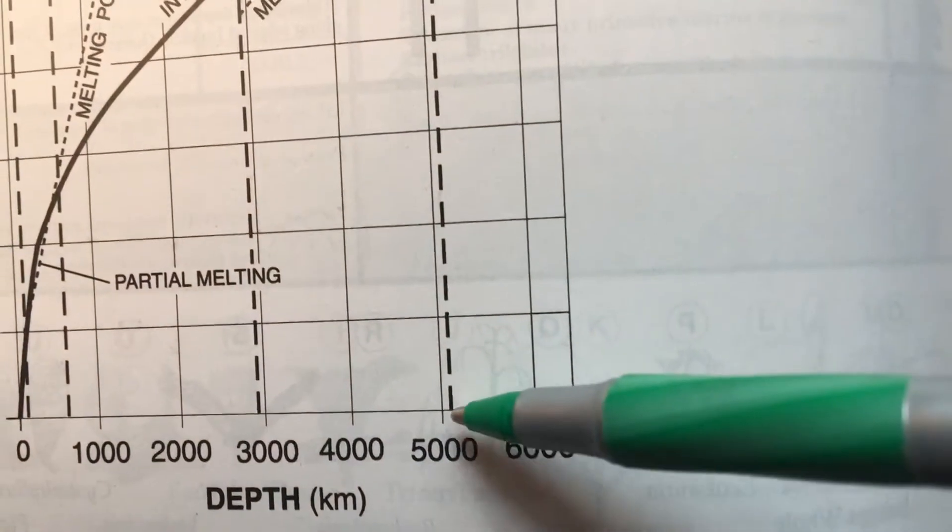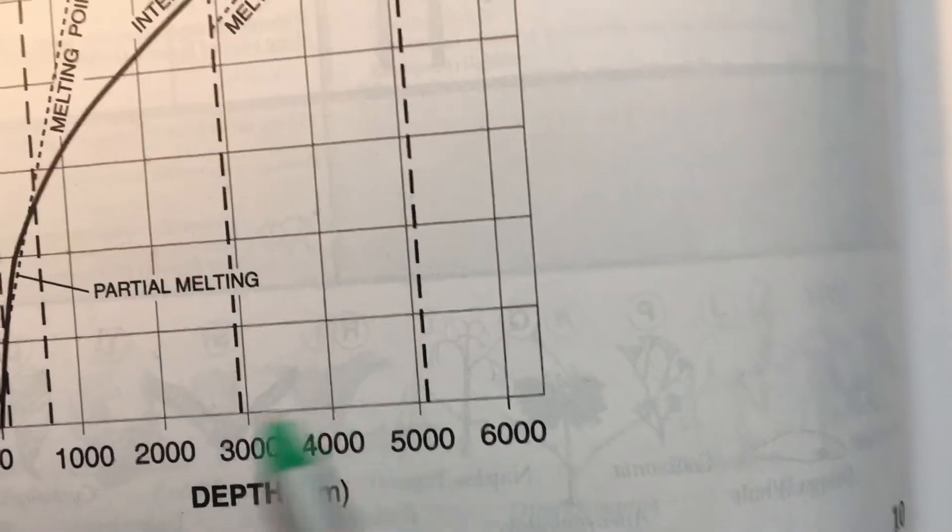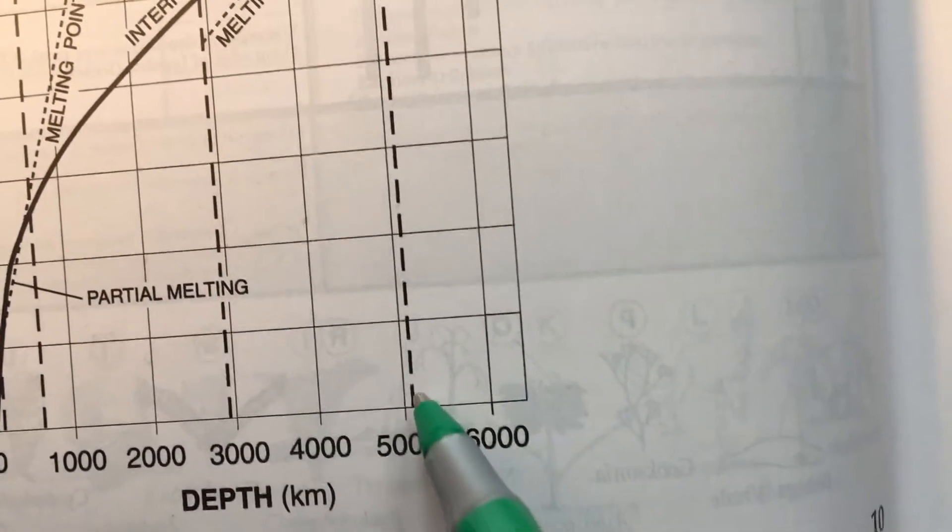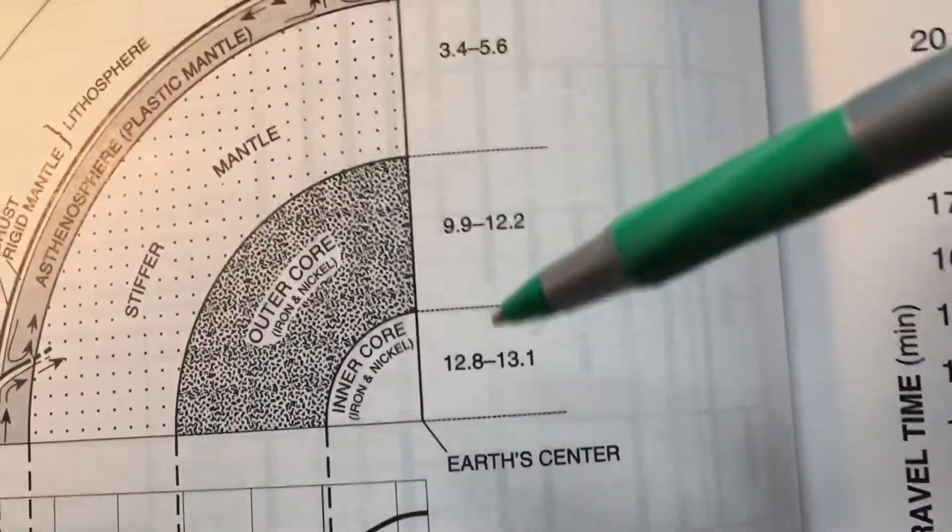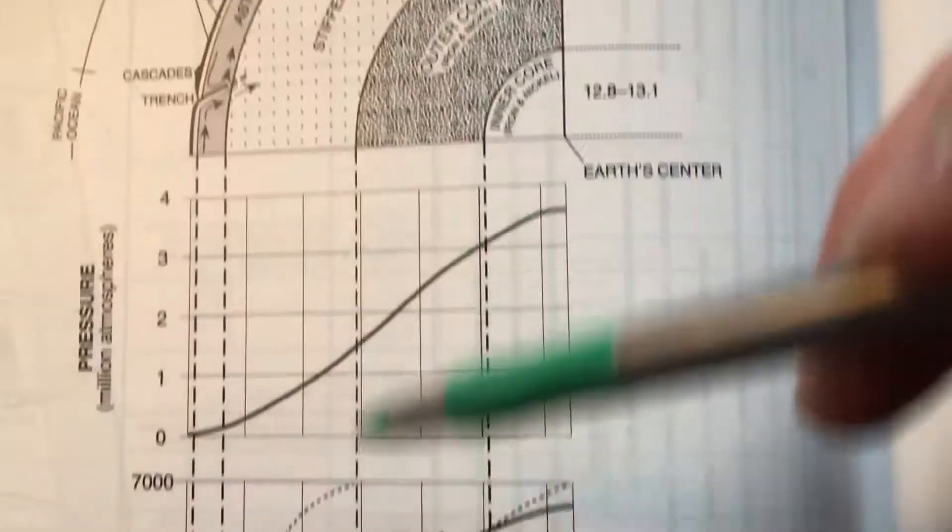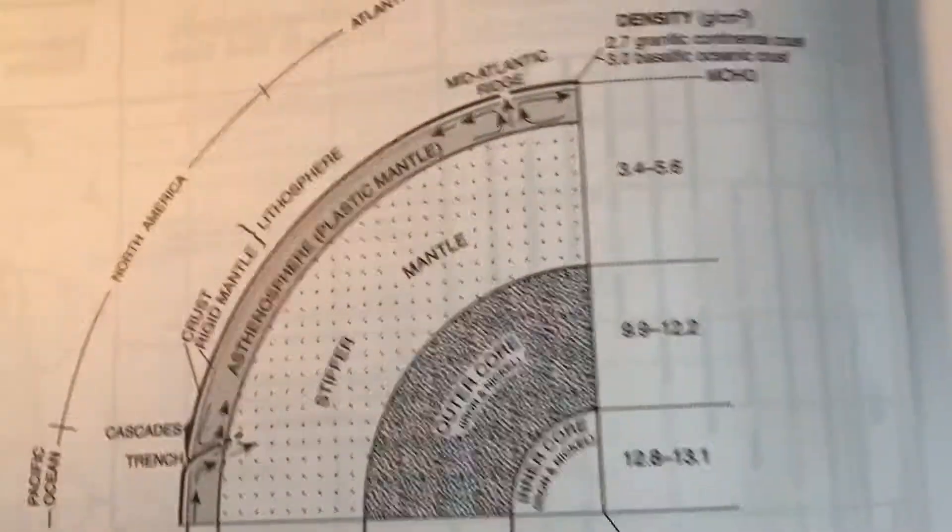And then again, for the thickness thing, if you wanted to say how thick is the outer core, well it goes from about 5,000 to about 3,000, so it looks like it's about 2,000 kilometers thick, plus a tiny bit there and a tiny bit there, maybe 2,200 kilometers thick. So this is going to get you through most of these types of problems and I think I'll put up some practice stuff for this for you guys today.